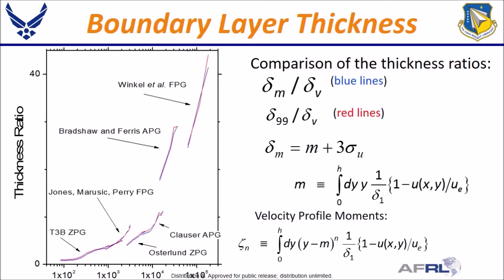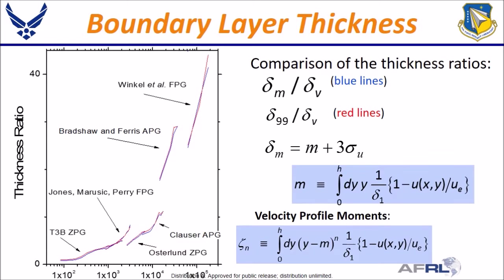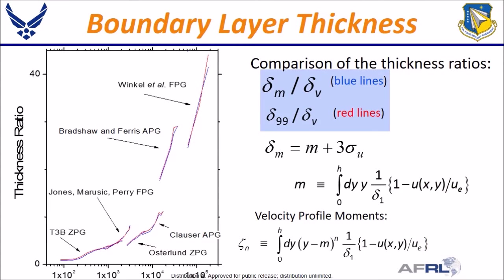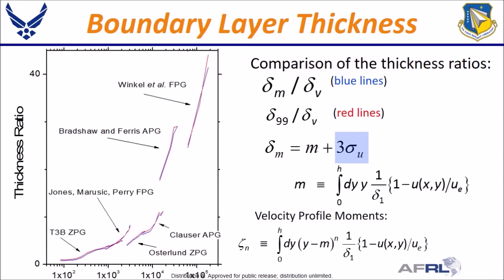Now consider another obvious boundary layer kernel based on the velocity profile itself, or in this case the defect profile. The mean value and the central moments for the defect-profile-based kernel are shown here. For the turbulent boundary layer, the new boundary layer description allows us to look at the ratio between the inner viscous region thickness and the overall velocity profile thickness — using the second derivative kernel for delta sub v and the outer boundary layer thickness delta sub m, defined to mimic the 99% thickness using three sigma. We should note that in the PDF world it is more traditional to use four sigma. Here's a plot using the two ratios for some turbulent boundary layer data sets covering a large Reynolds number range.